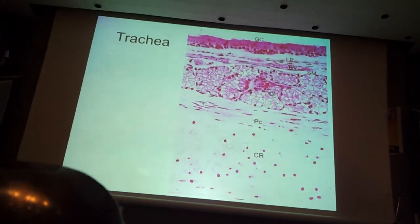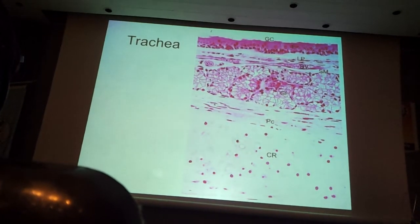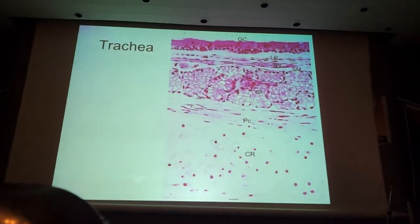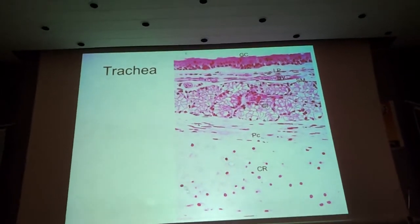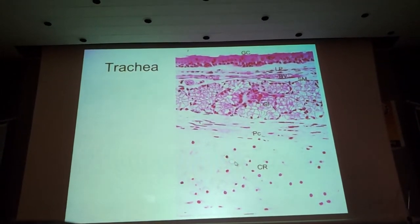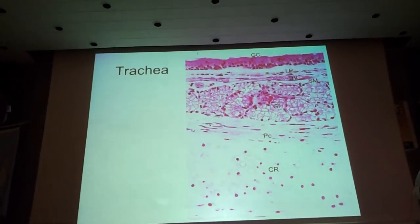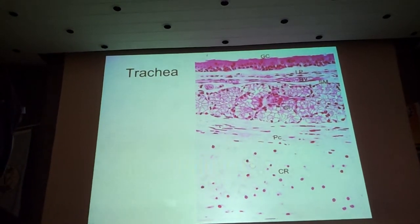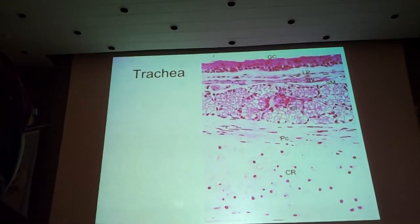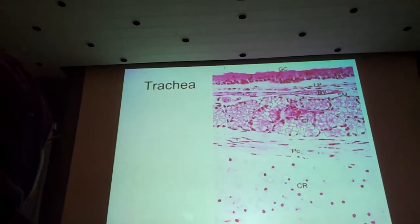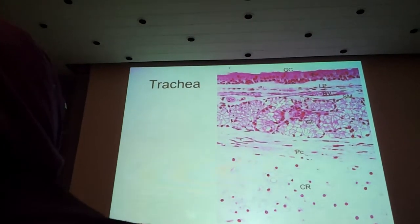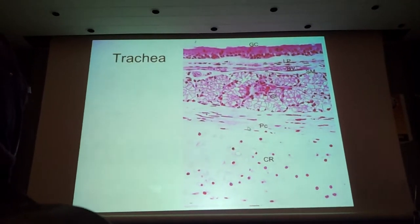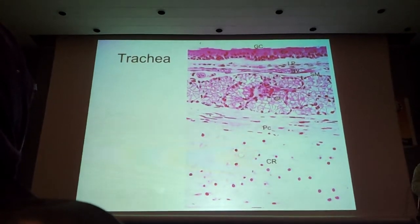Then you have the sub-mucosa. All those structures in the sub-mucosa are just mucous and seromucous glands. And finally there is the adventitia. This structure here is hyaline cartilage. In the wall of the trachea, you have 16 C-shaped rings of hyaline cartilage. The posterior end is open, and the posterior ends of the rings of cartilage are connected by smooth muscle called trachealis. In most cases, hyaline cartilages are surrounded by a layer of connective tissue called perichondrium — 'chondrium' meaning cartilage, 'peri' meaning surrounding.